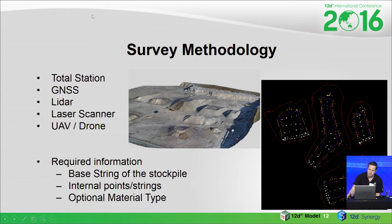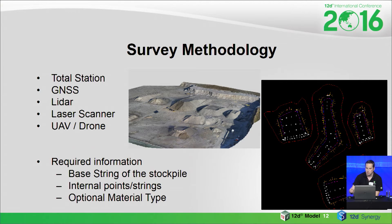You can use the tin-to-tin comparison and then have a triangle or a polyline around it, but after two or three piles it gets quite laborious doing that many times, especially when you get 80 or 90 piles in a quarry.